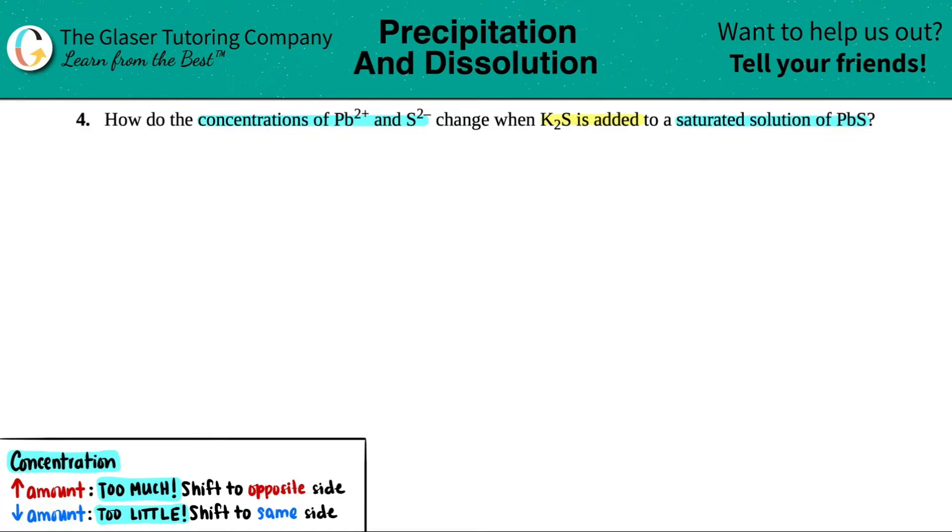Okay, so a couple things going on here. The question is asking what's going to happen to these concentrations. So let's just set that up. I'm going to put that over here. We're looking for what's going to happen to the Pb²⁺ concentration and what's going to happen to the S²⁻ concentration. So we have one out of three answers. Is the Pb²⁺ going to increase, decrease, or remain the same? No effect. And the same thing for the sulfur.